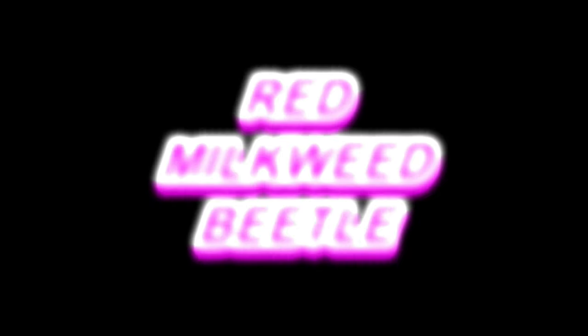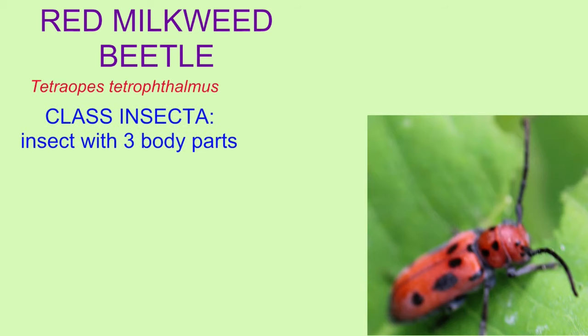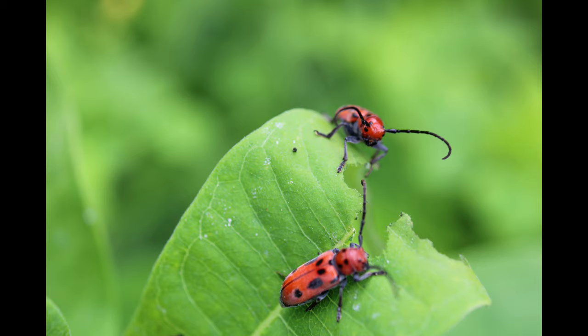Red milkweed beetles are insects belonging to the class Insecta, and this can be identified given their three body parts — the head, thorax, and abdomen — the three pairs of legs attached to the thorax, their compound eyes, and other features.